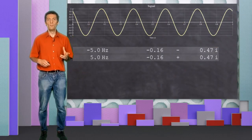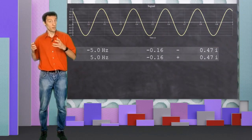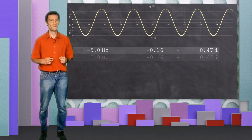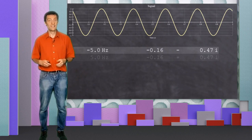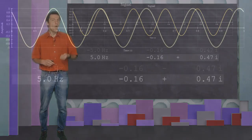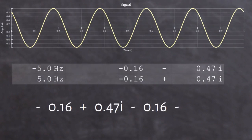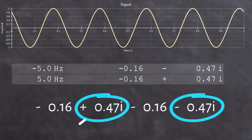What is interesting about the complex number representing the contribution of the minus 5 Hz frequency, is that it is the complex conjugate of the number representing the plus 5 Hz frequency. When we add these two numbers together, just look at what happens to the imaginary terms. They cancel out.